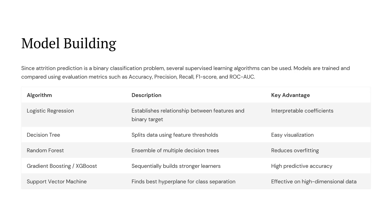Since predicting employee attrition is a binary classification problem, we can use several supervised learning algorithms. We try and compare models using metrics like accuracy, precision, recall, F1 score, and ROC AUC.